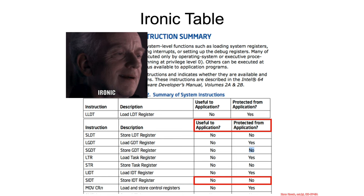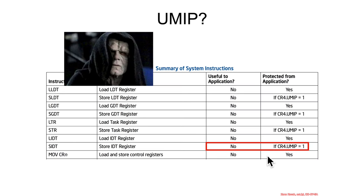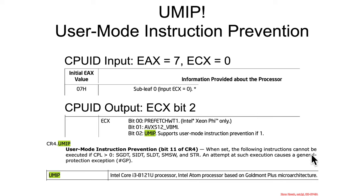But as I was updating these slides, I went to grab a higher quality screenshot, and this is what I saw in the manual instead. SIDT, which previously was unprotected, now says it's protected from the application if CR4.UMIP equals 1. So what is UMIP? UMIP is User Mode Instruction Prevention. If you go to CPUID EAX=7, ECX=0, and get output in ECX, bit 2 being set means the hardware supports UMIP.